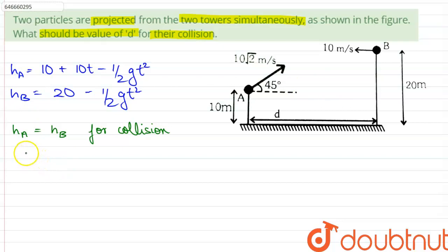Therefore, we can simply write that 10 plus 10T minus half of gT squared is equals to 20 minus half of gT squared. And therefore, in calculation we find out that time t is equals to 1 second.